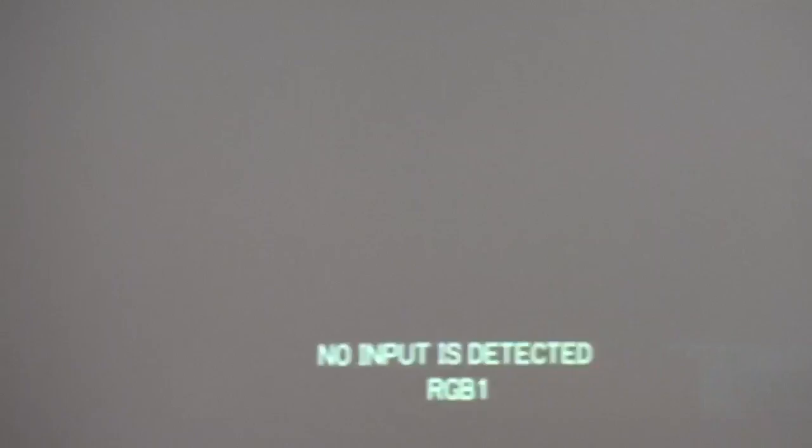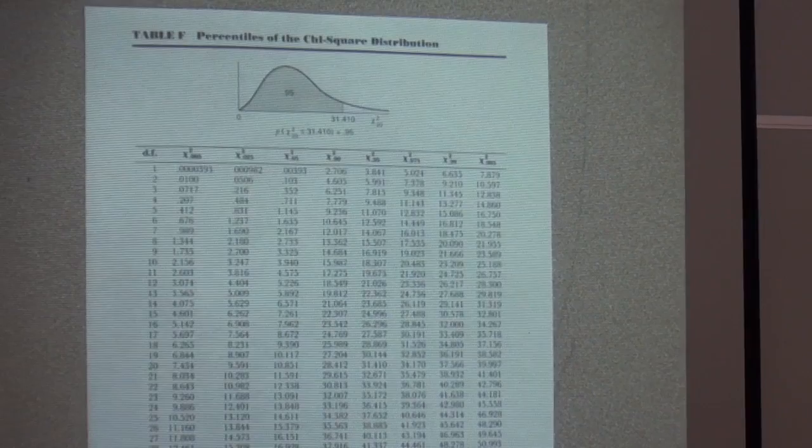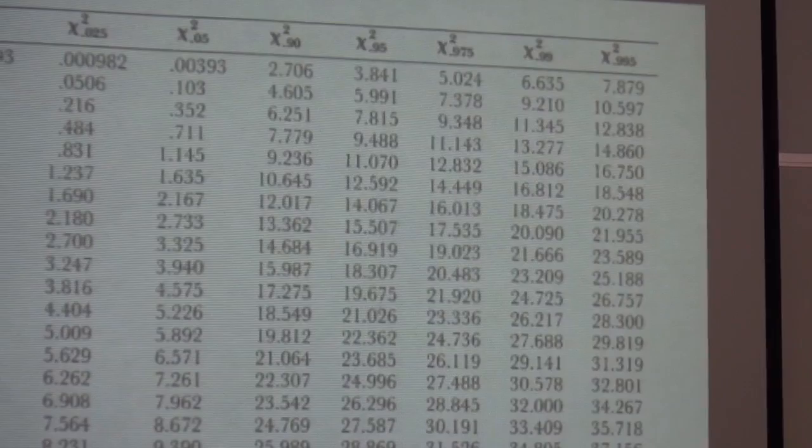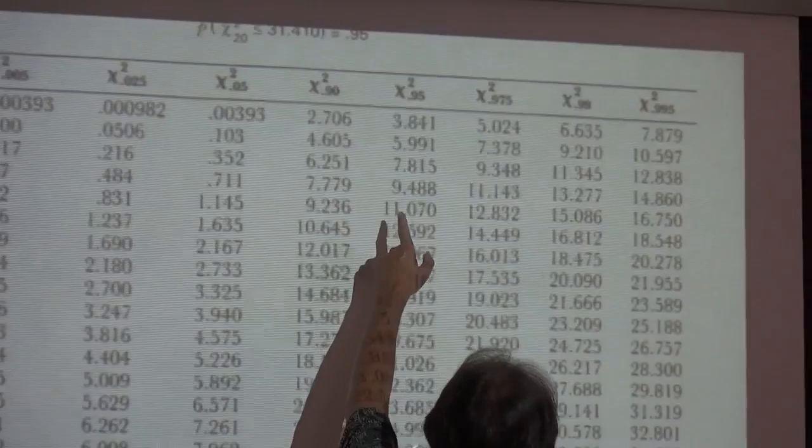3.84 — that's the 0.95 chi-squared critical value. One degree of freedom, unless otherwise indicated. I'm only interested in the upper bound of the test interval, so I use chi-squared 0.95 with one degree of freedom.